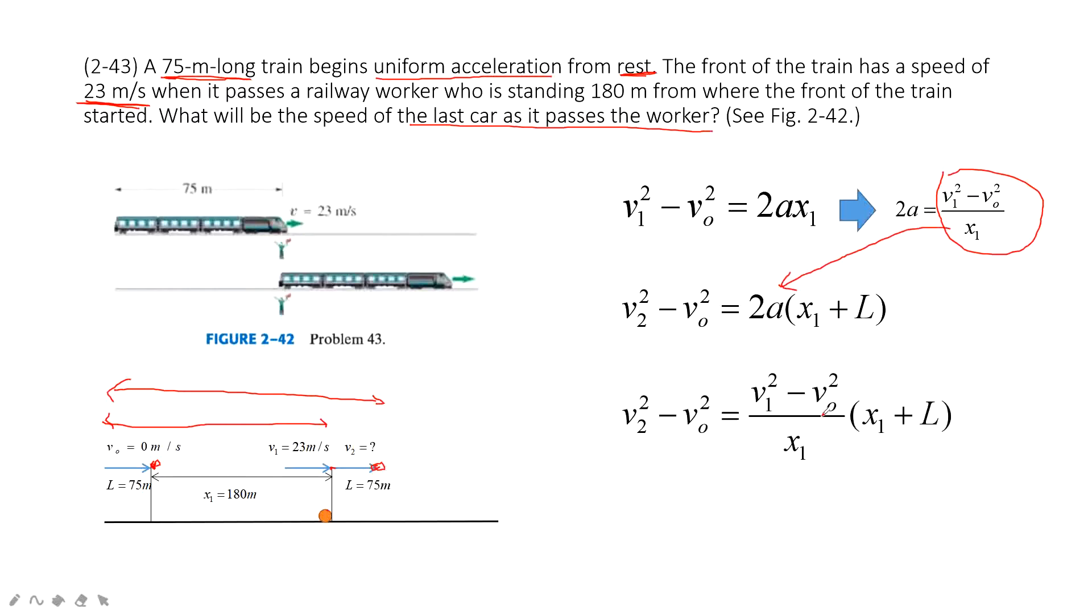When we put this term inside, it looks like that. And v0 is 0. So v2 very easily is just the square root of x1 plus L divided by x1 times v1. Then we input the number inside. Everything is done. That's all. Thank you.